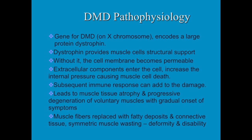Eventually there is atrophy of the muscle tissue and degeneration of the voluntary muscles with the gradual onset of symptoms. The voluntary muscles are all those that you can consciously command, but with muscular dystrophy your brain is saying to do it while your muscles are saying they don't have enough strength. Over time the muscle tissue is replaced with fat deposits and connective tissue, and what we see is symmetric muscle wasting.